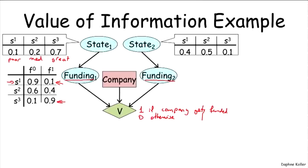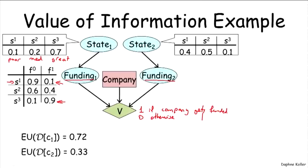Now let's think about the two strategies the agent can take without any information. If the agent chooses to join company one, the expected utility is 0.72. The expected utility of company two, which is not doing as great, is only 0.33. Now what happens if the agent gets to make an observation — specifically, the observation of S2, the state of the weaker of the two companies? The agent has a mole inside the company and can get access to that information before making his decision.